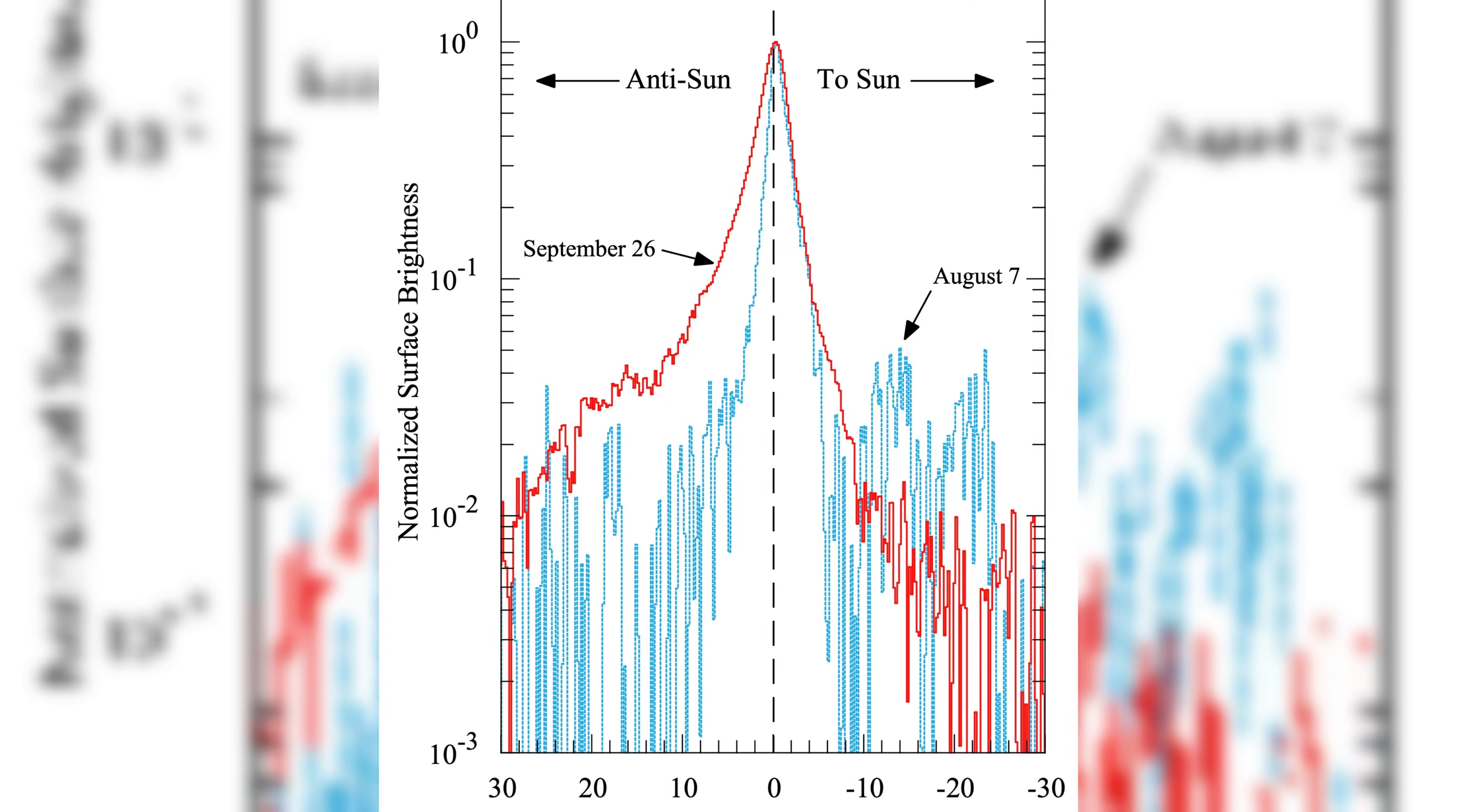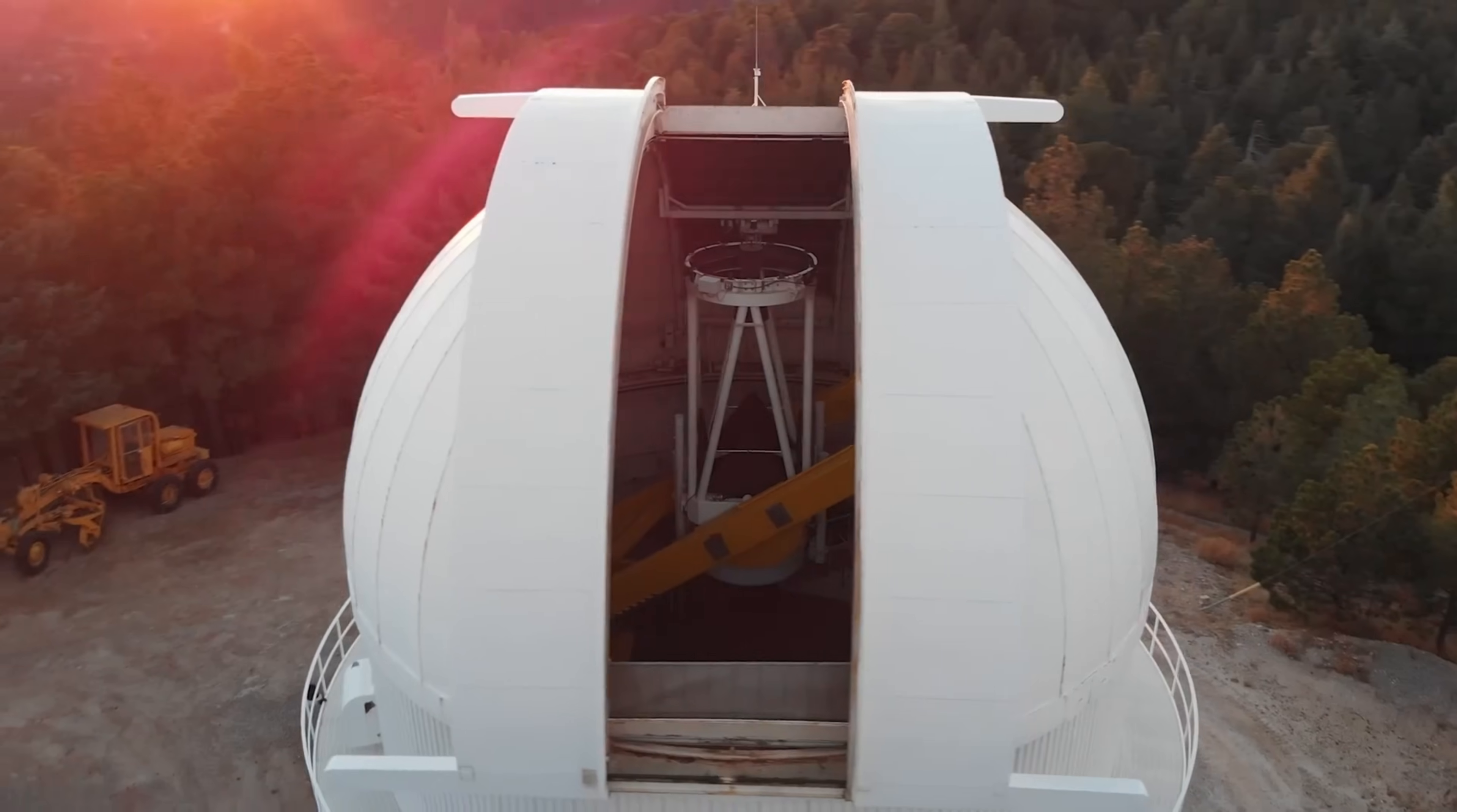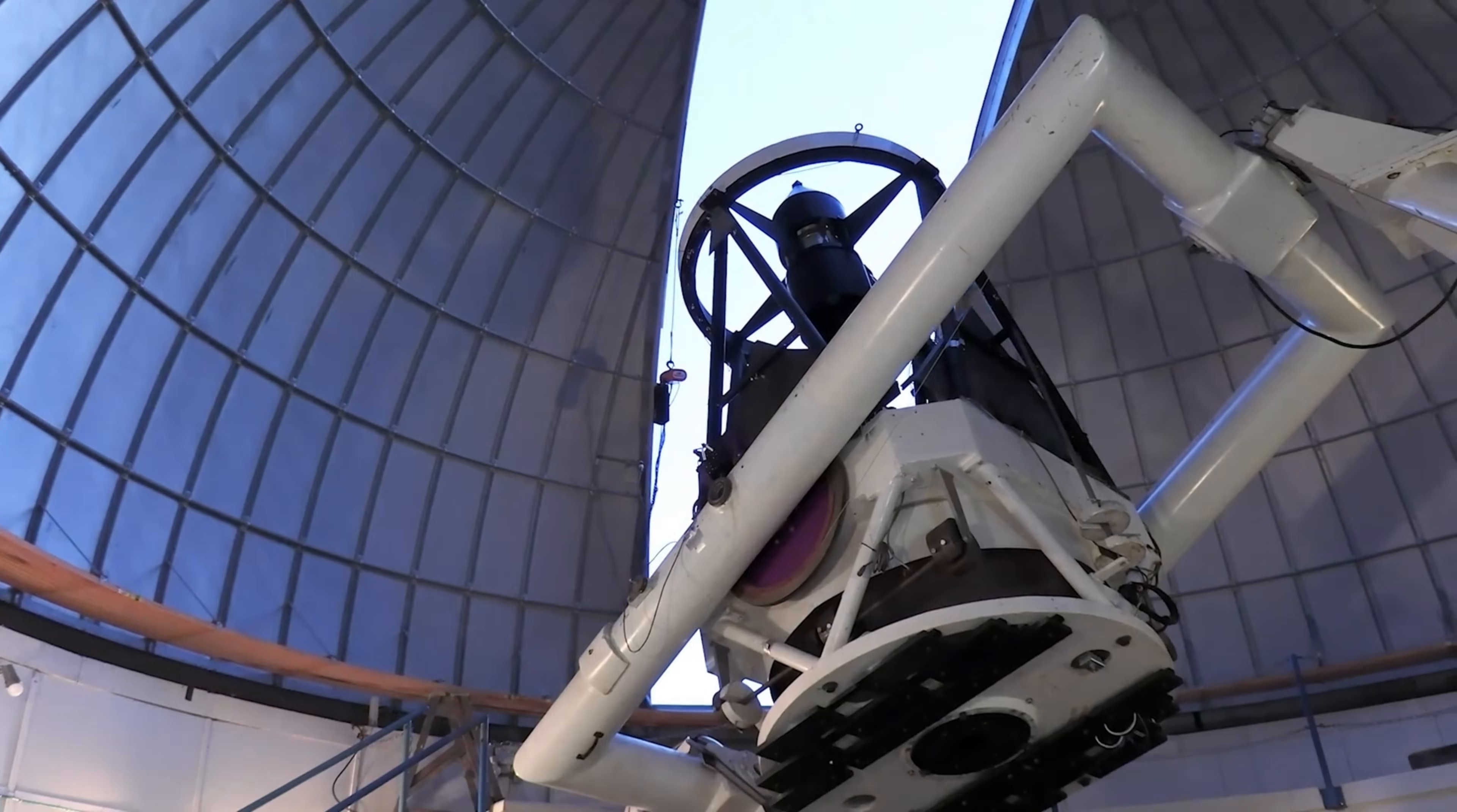This strange behavior suggests that the object's surface is composed of materials that are not typically seen in comets. The light reflection from 3I Atlas did not match the pattern expected from a typical icy body, indicating that its surface may be made of something that differs fundamentally from the ice and dust that are common in natural comets. This has led to speculation that 3I Atlas might not be a naturally occurring object at all, but something that has been engineered or modified in some way.